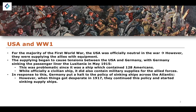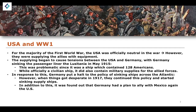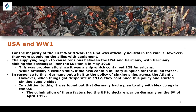It was desperation that led Germany to continue sinking supply ships, some of which may have been American. In addition to this, it was found out that Germany had a plan to ally with Mexico against the United States. So not only were they attacking cargo ships which could contain US nationals, but they were also directly planning a conflict against the USA. All of these factors led the United States to declare war on Germany on the 6th of April 1917, officially ending their quote-unquote neutrality.